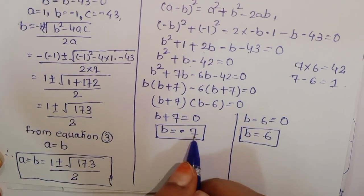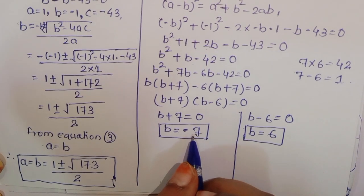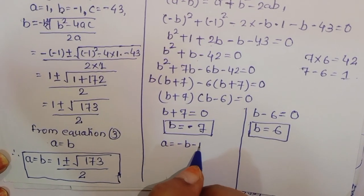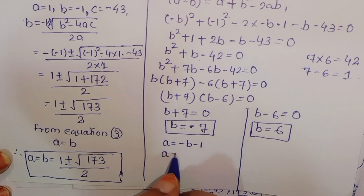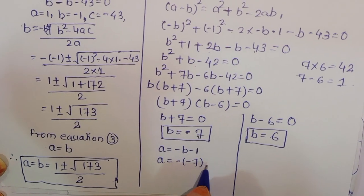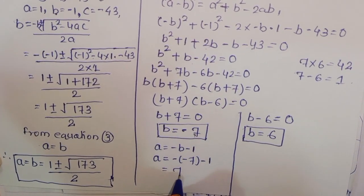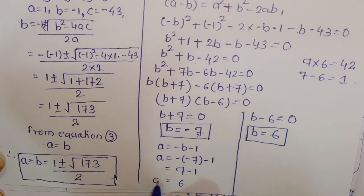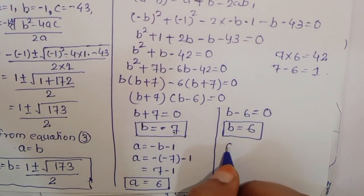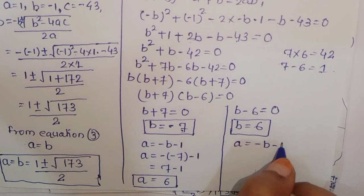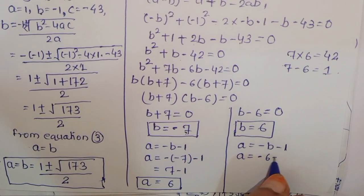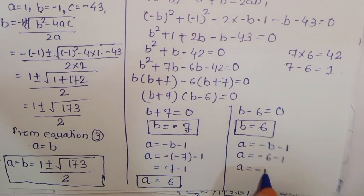If b equals minus 7, then from a equals minus b minus 1, a equals minus(minus 7) minus 1 equals 7 minus 1 equals 6. If b equals 6, then a equals minus 6 minus 1 equals minus 7.